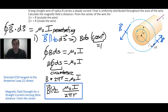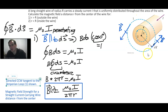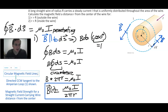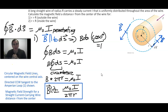As a vector, the magnetic field is directed counterclockwise and tangent to the Amperian loop shown. The magnetic field lines circulate in concentric circles, with the field vector always tangent to those circles — circular magnetic field lines centered on the wire's central axis.